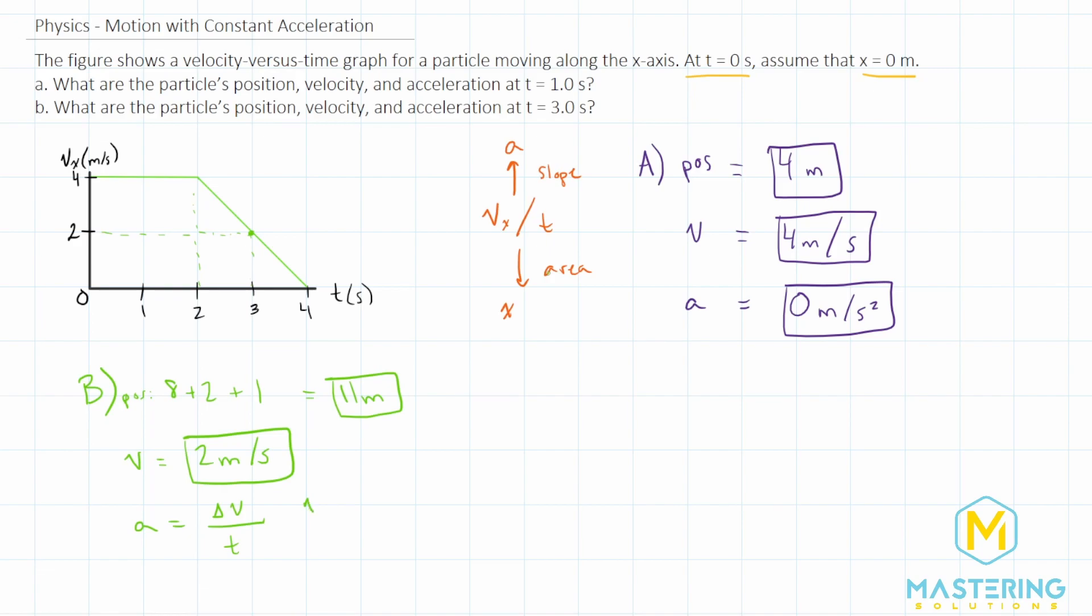So v final minus v initial over the time. The final velocity is zero meters per second, minus the initial, which is four meters per second, over the time of two to four, so that's two seconds. So we have negative four divided by two seconds, which gives us negative two meters per second squared for the acceleration.